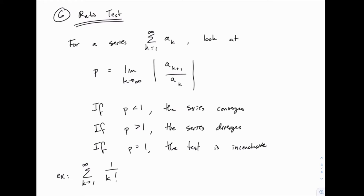I've got an example here to start us off: the series from k equals one to infinity of 1 over k factorial. I mentioned this one because a lot of times the ratio test is especially useful when you have factorials, for reasons that we'll see as we go through this. The algebra simplifies nicely.